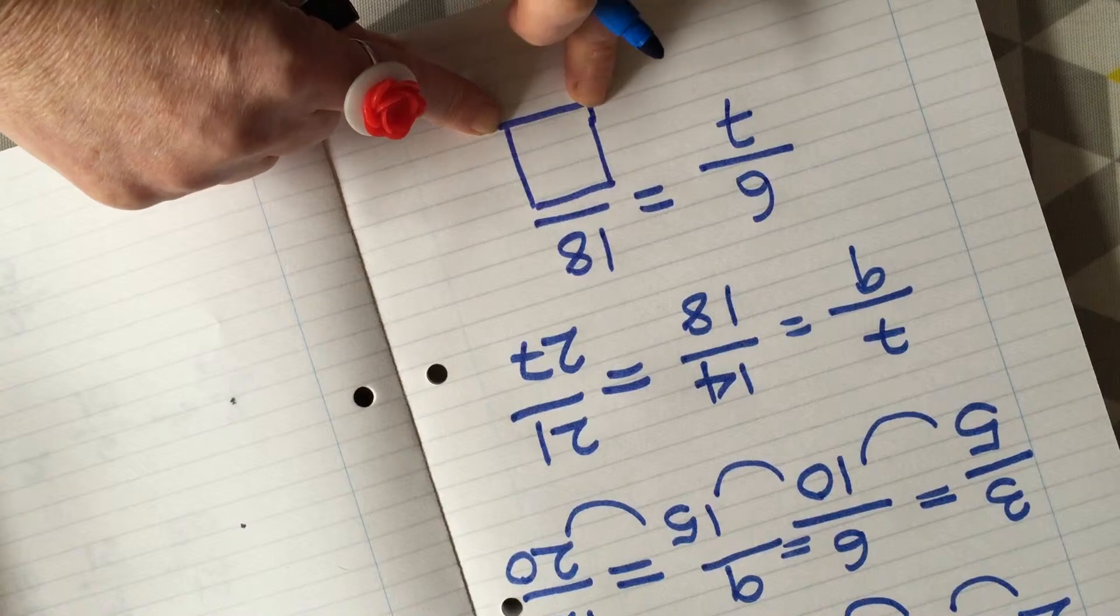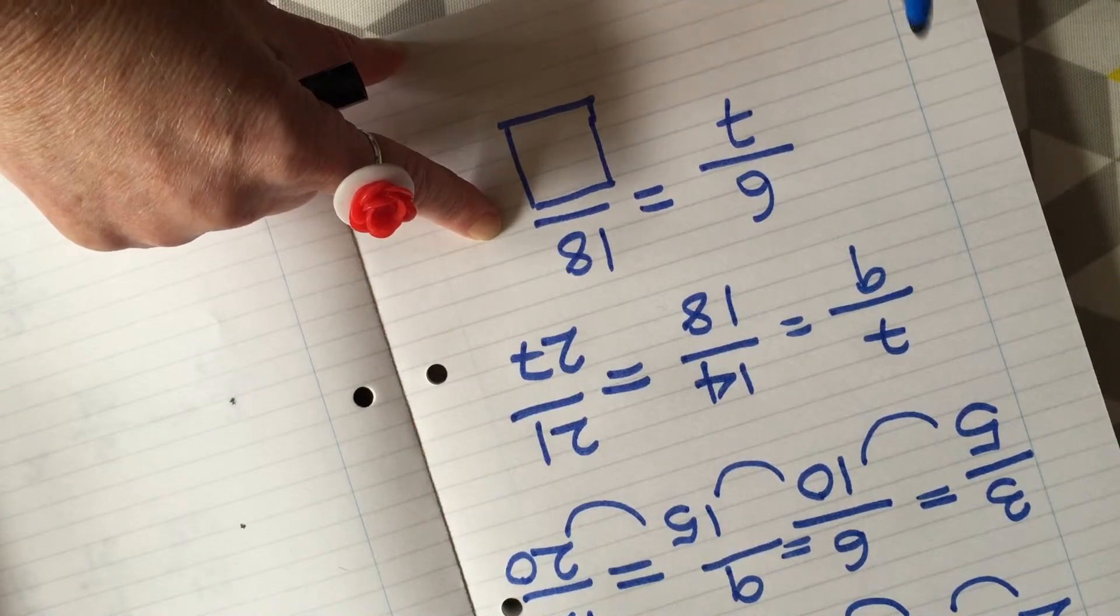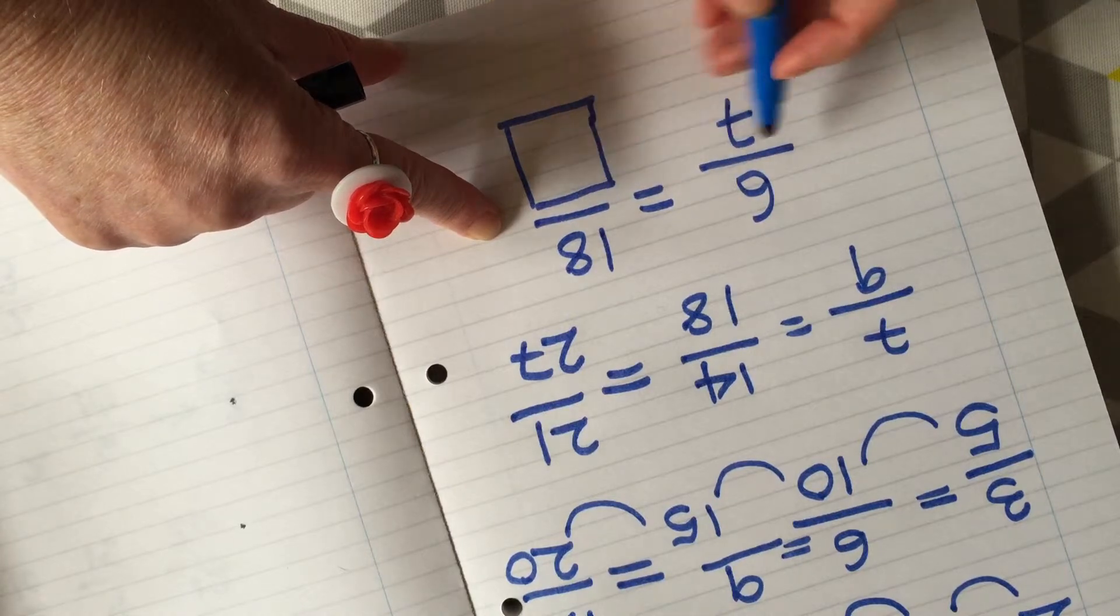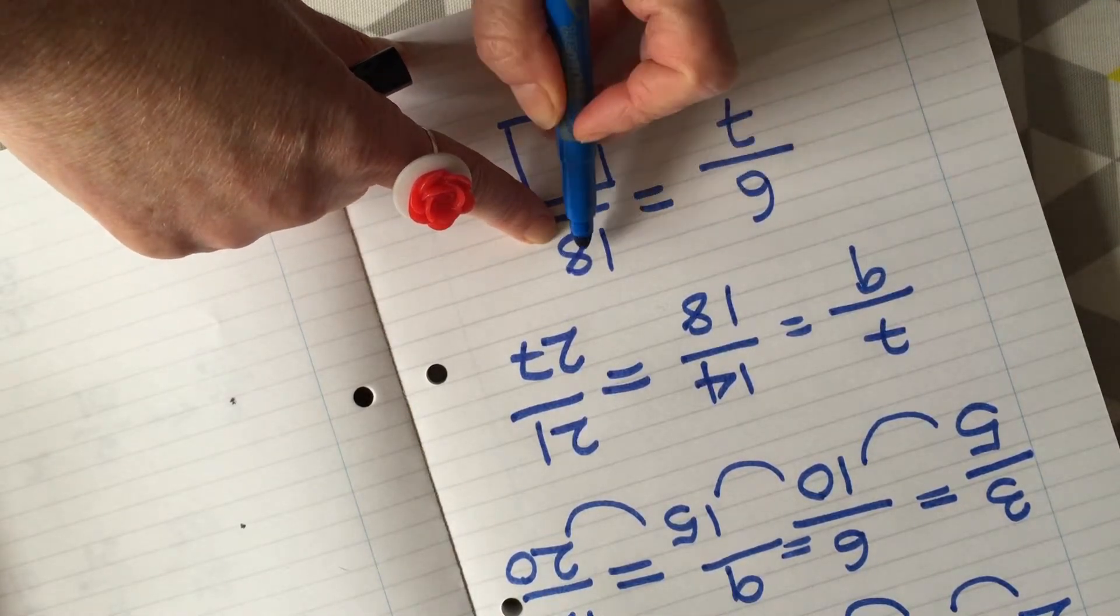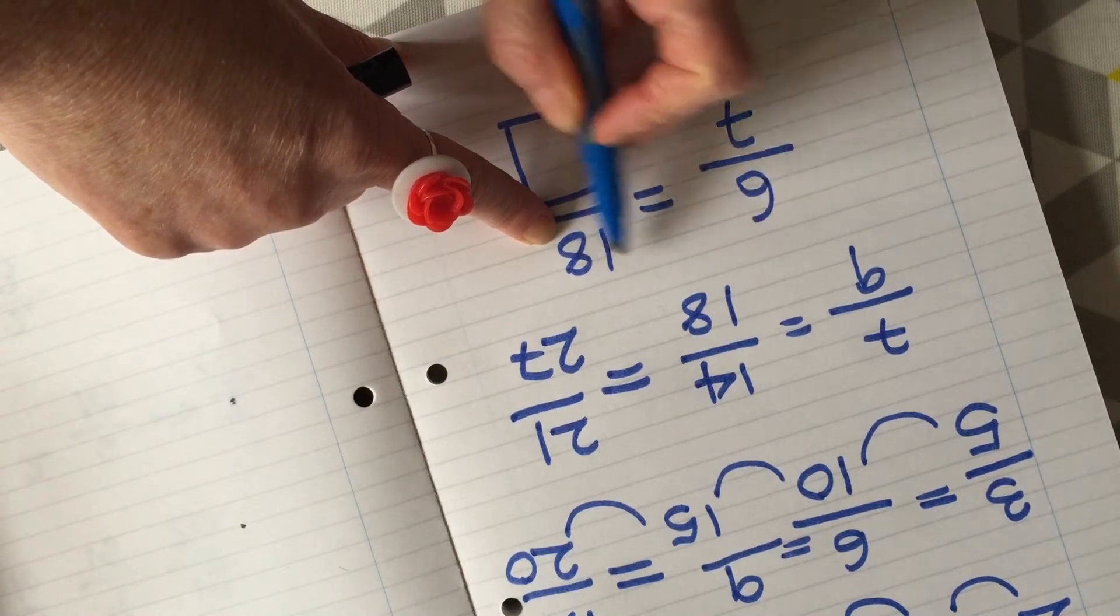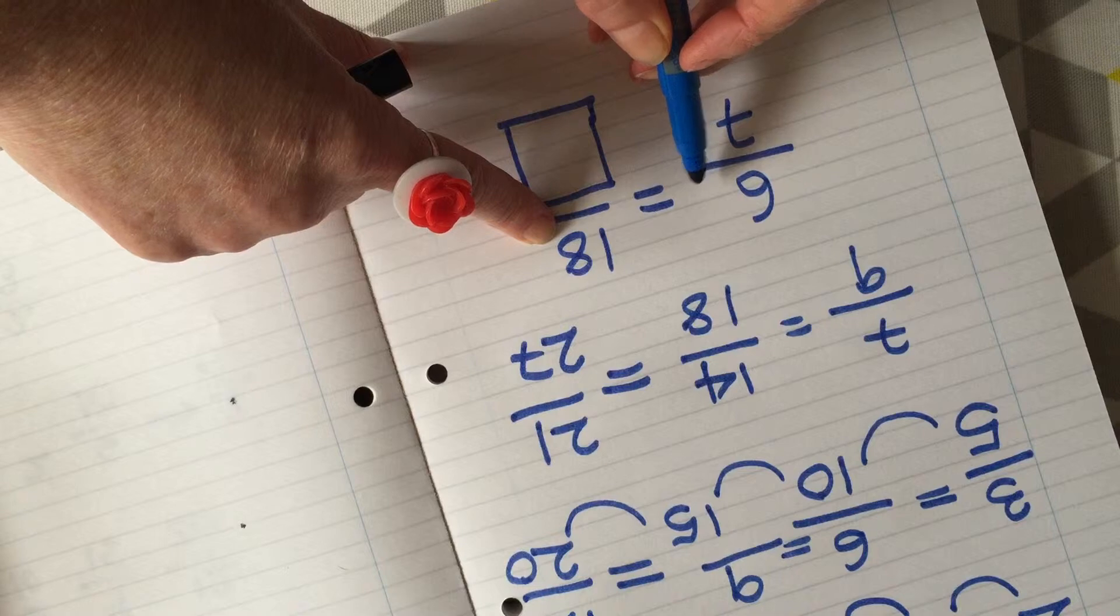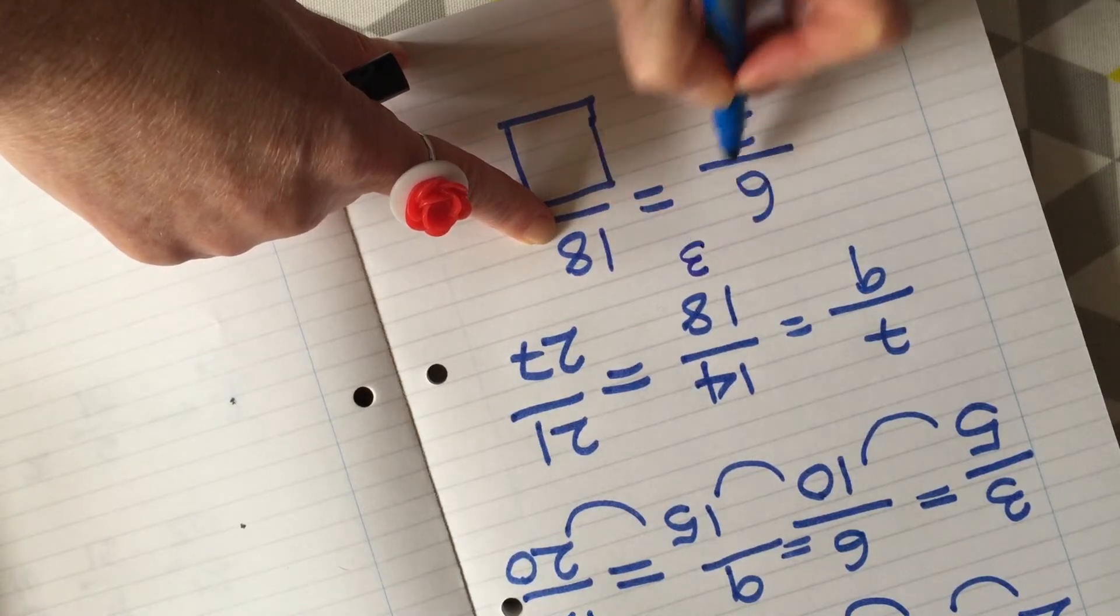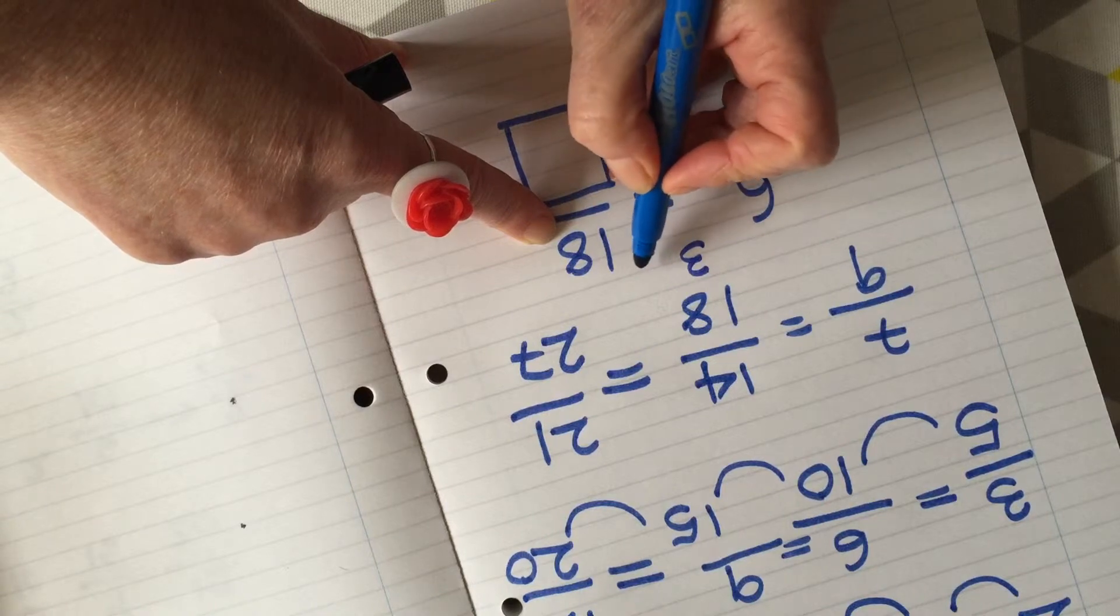We got a bit befuddled by this, so hopefully we can show you now how this might work. So let's have a look here. We had a look and saw that the relationship, the relative between the six and the 18, was three because three sixes are 18.